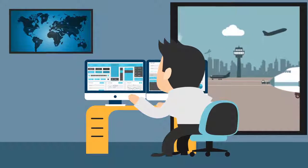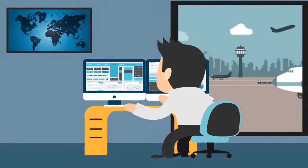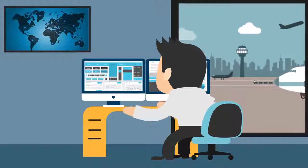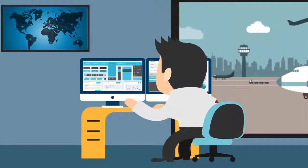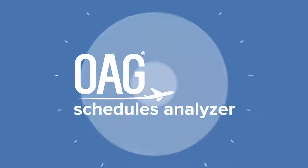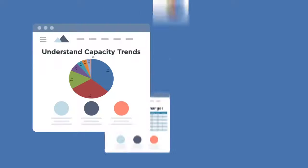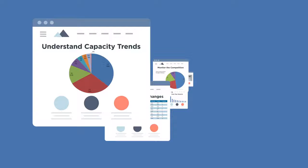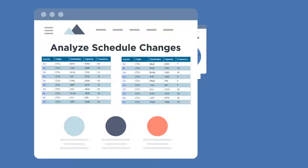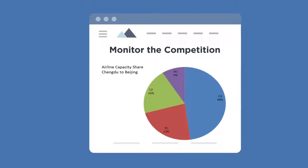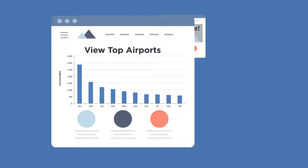All over the world, network planning teams in major airlines and airports have relied on OAG Schedules Analyzer to understand capacity trends, analyze schedule changes, monitor the competition, view top arrival and departure airports, and more.